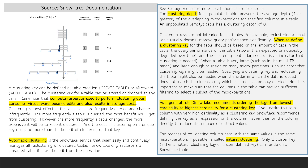As a general rule, Snowflake recommends ordering the keys from lowest cardinality to highest cardinality for a clustering key. If you desire to use a column with very high cardinality as a clustering key,